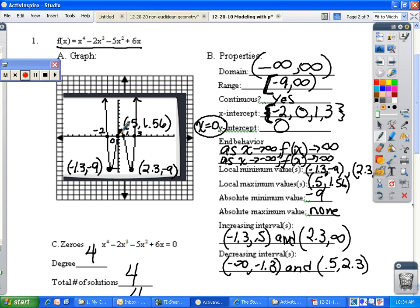Increasing intervals on your graph from left to right. The graph increases here and also here. So therefore, the two intervals that represent that are negative 1.3 to 0.5 and from 2.3 to infinity. Your two decreasing values on the graph are from negative infinity up to negative 1.3 and then from 0.5 to 2.3. Again, using the x values for those intervals.